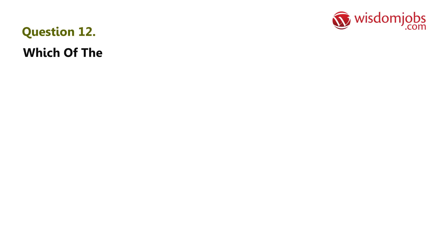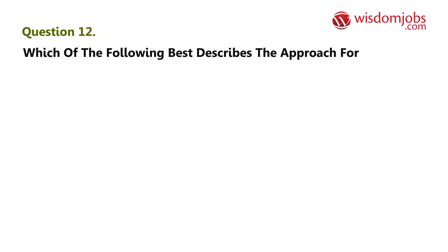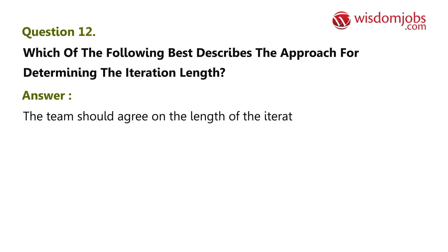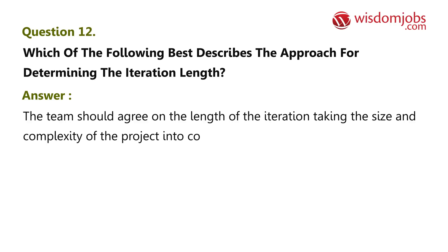Question 12: Which of the following best describes the approach for determining the iteration length? Answer: The team should agree on the length of the iteration, taking the size and complexity of the project into consideration.